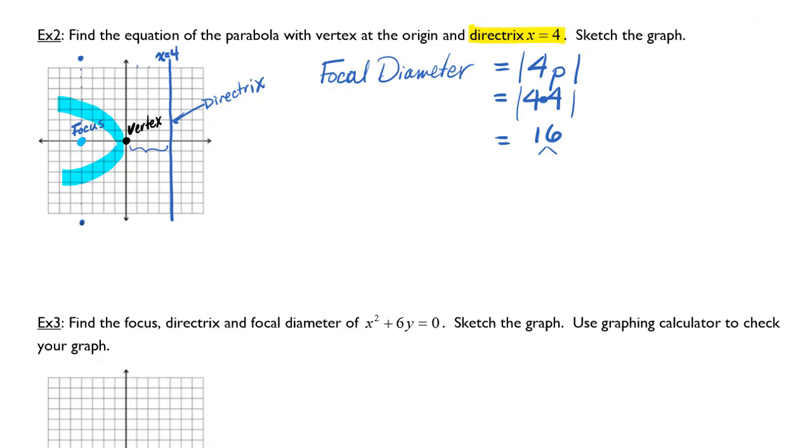And now I can draw my parabola. It looks something like this. Since it's opening to the side, it will be a y squared. Since my focus is at negative 4, 0, p is equal to negative 4.